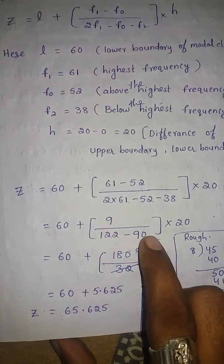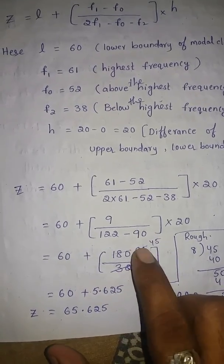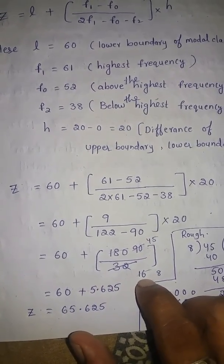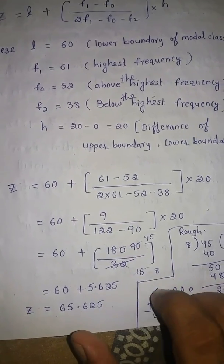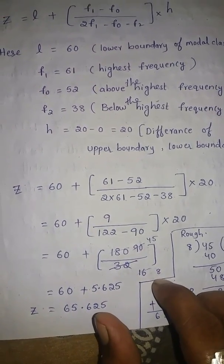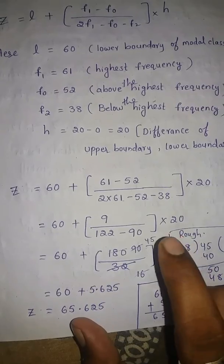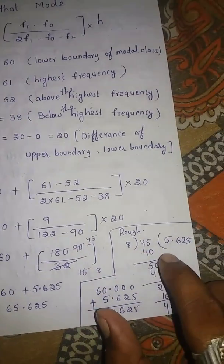60 plus 9 into 20 is 180 and the difference of 122 minus 90 is 32. Cancellation with 2 table, 2 16, 32 2 90 times 180, again it will go in 2 table, 2 8, the 16 to 45 times.